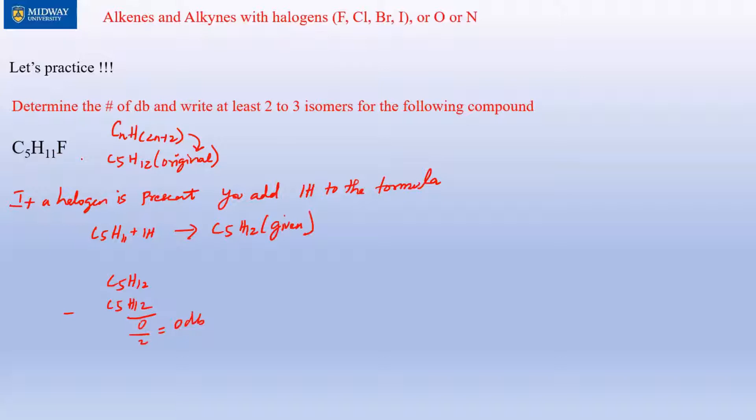And I also have a rule here: halogens can connect to any element only through a single bond. What I mean by that is what I'm trying to get at by writing two to three different isomers.